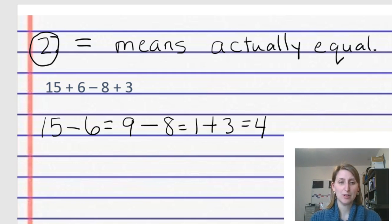So for example to solve this problem, 15 plus 6 minus 8 plus 3, what they'll do is they'll write all the problems in order with equal signs between them. So 15 minus 6 equals 9, and then they'll do the minus 8 from the original problem, that equals 1, and then they'll add on the 3 from the original problem, that equals 4.